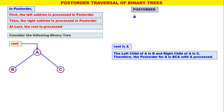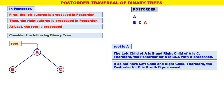Observe that the root A is processed last: B, C, A — with A processed. Therefore, A is replaced by B, C, A with A marked as processed. Next, B does not have a left child or right child. Therefore, the post-order of B is B only, with B processed.